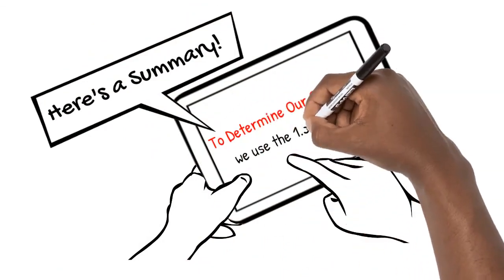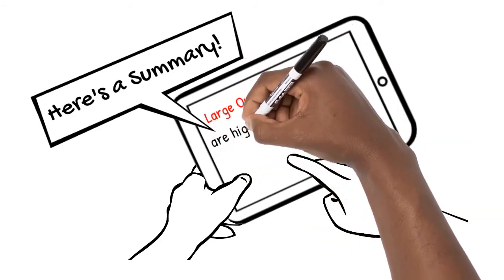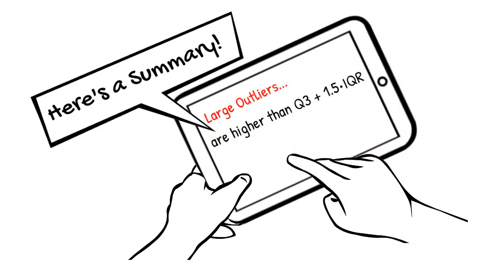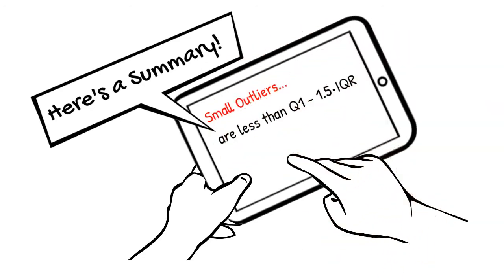To determine our outliers, we use the 1.5 IQR rule. Large outliers are higher than the upper quartile plus 1.5 times the interquartile range. Small outliers are less than the lower quartile minus 1.5 times the interquartile range.